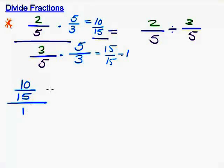We're left with 10 fifteenths over 1. So since it's over 1, we can just rewrite that as 10 fifteenths. And can we simplify this any further? Well, 10 and 15 both have a common factor. They have 5 as a factor.